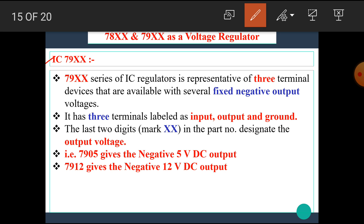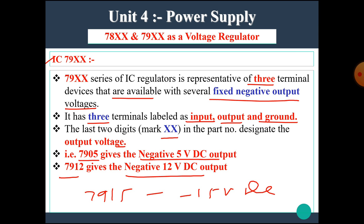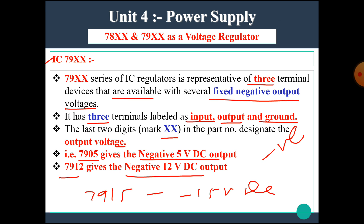Now let's see the IC 79 series voltage regulator. The 79 series voltage regulator is representative of three-terminal devices that are available with several fixed negative output voltages. It has three terminals labeled as input, output, and ground. The last two digits designate the output voltage — 7905 gives negative 5V DC output, 7912 gives negative 12V DC output, and 7915 gives negative 15V DC output.